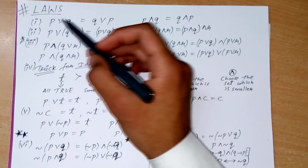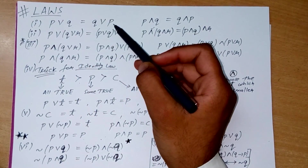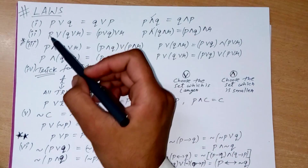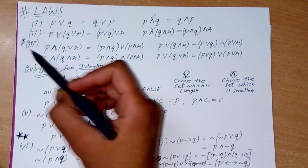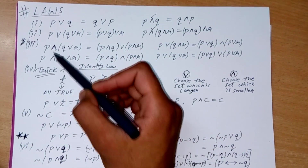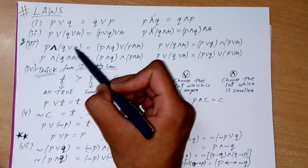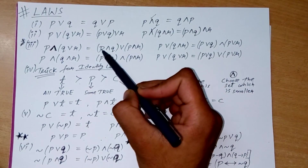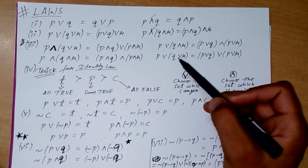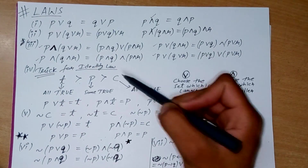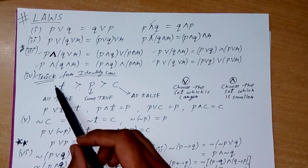The last part consists of laws you may have already studied in sets or relations chapters. P or Q is the same as Q or P. P or (Q or R) can also be written as (P or Q) or R — we just shift the brackets. The distributive law: P and (Q or R) equals (P and Q) or (P and R) — we distribute the connector into the brackets.